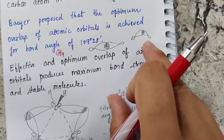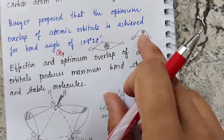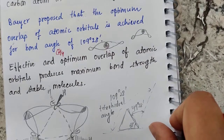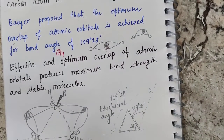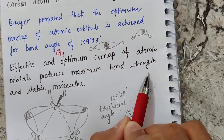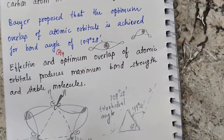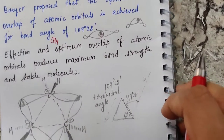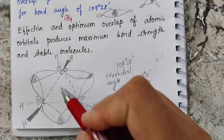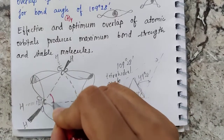If there is any deviation from the tetrahedral geometry, the overlap will not be optimum. If the overlap is not optimum, there will be angle strain. If the overlap is effective, the bond strength will be maximum and the molecule will be stable, or in other words, the reactivity will be lesser.